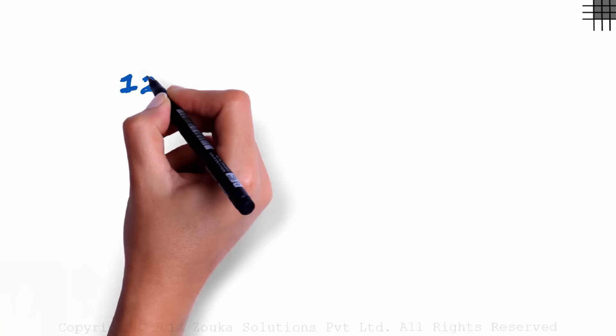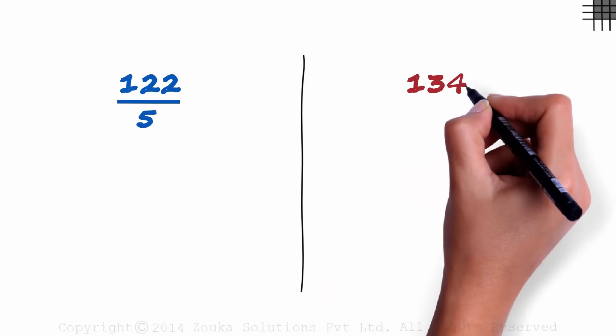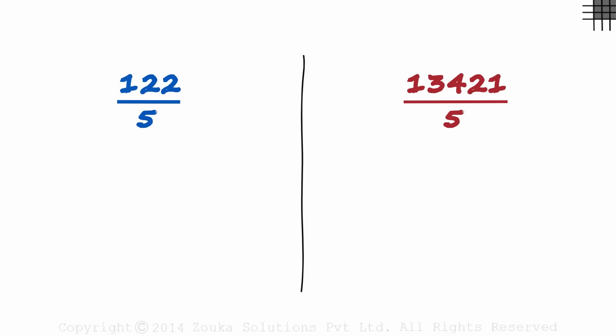Let's look at two more examples. First, 122 over 5, and second, 13421 divided by 5. Let me solve the first one and you try solving the second one on your own.